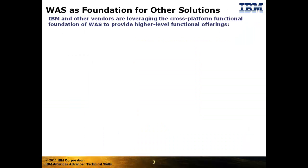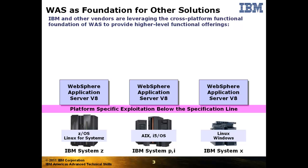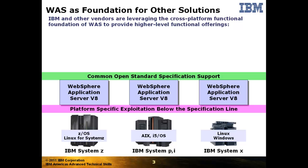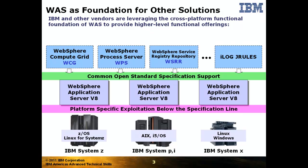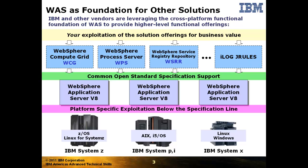We can take this one step further. IBM and other vendors are taking advantage of the solid foundation WAS provides and creating higher level solutions based on the cross-platform open standard Java EE runtime. So we have WAS offered across several hardware and operating system platforms with platform-specific exploitation occurring below the line. The common and consistent open standard interface line is what provides higher level applications and solutions the opportunity to be platform neutral. And on top of that, IBM and other vendors build their solutions, giving you the opportunity to exploit those solutions for the benefit of your business.